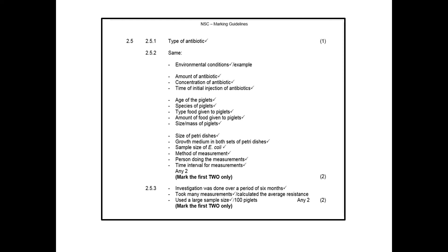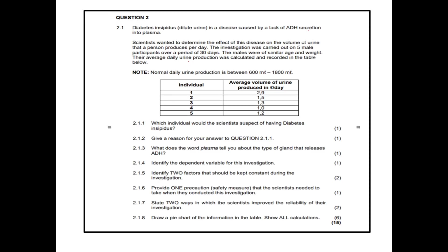Let's move on to another question from an exam — question 2.1, taken from the Houteng prelim paper. Diabetes insipidus, which is dilute urine, is a disease caused by a lack of ADH secretion into plasma. Scientists want to determine the effect of this disease on the volume of urine that a person produces per day. The investigation was carried out on five male participants over a period of 30 days. The males were of similar age and weight. The average daily urine was calculated and recorded in the table below. Note: normal daily urine production is between 600 millilitres to 1,800 millilitres.